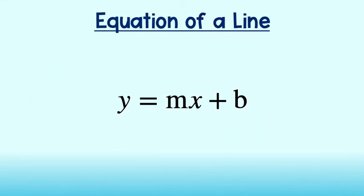Okay, before we start, let's take a look at the equation of a line, in particular slope-intercept form. We know that m in this equation represents slope. However, it also represents the rate of change. I'll show you. Let's take a look at an example.